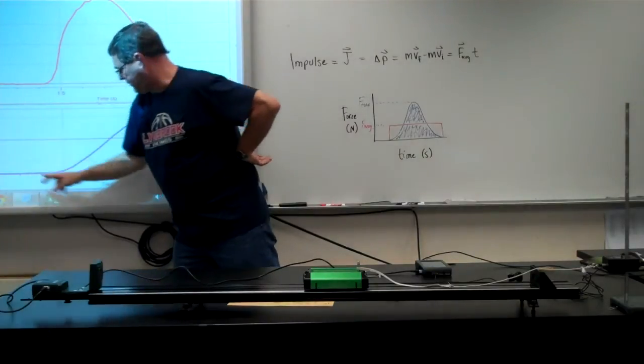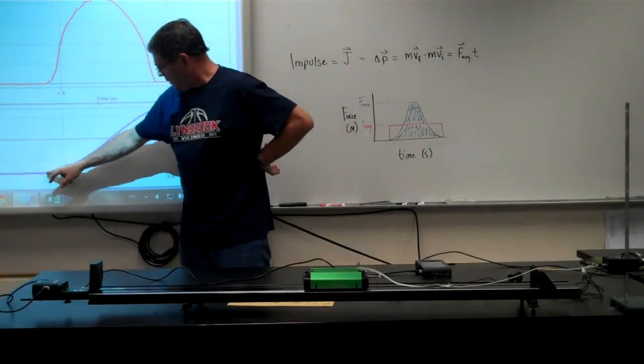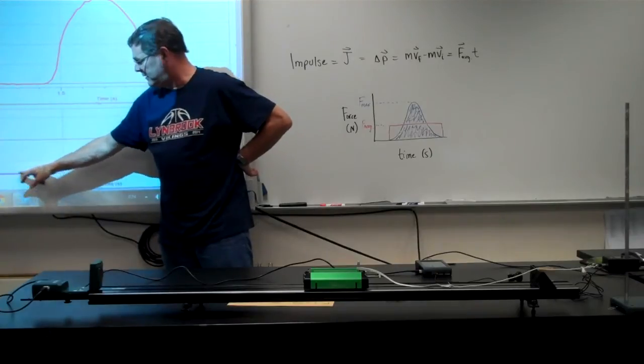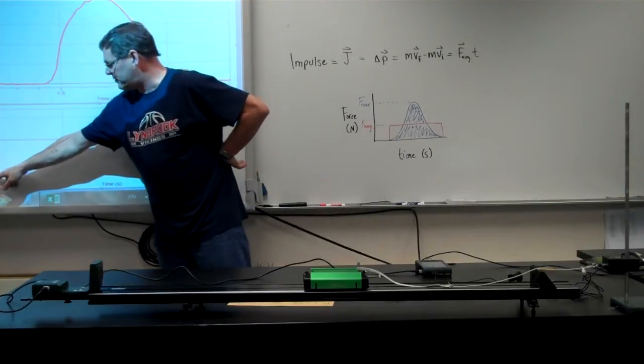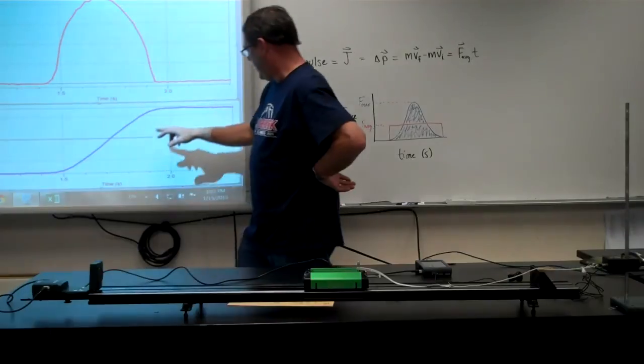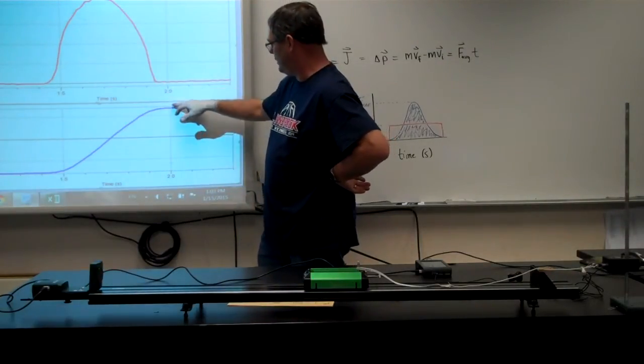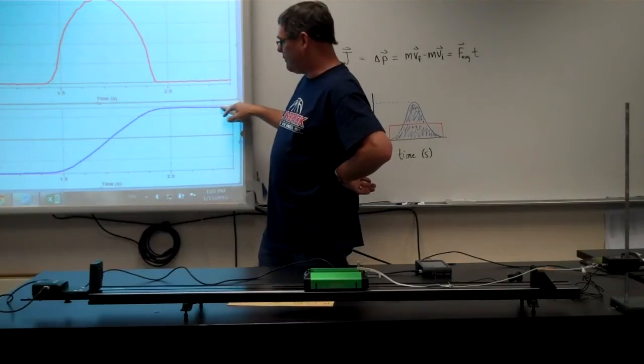Here's my velocity versus time graph. Before the band begins to stretch, here's my initial velocity. Moving toward the sensor is a negative value. And then after it reverses direction, here's my velocity for coming back.